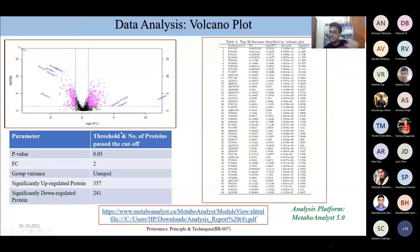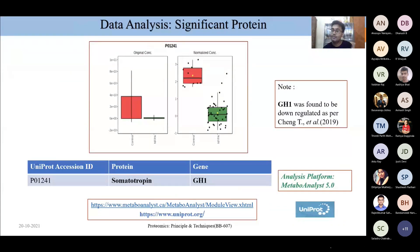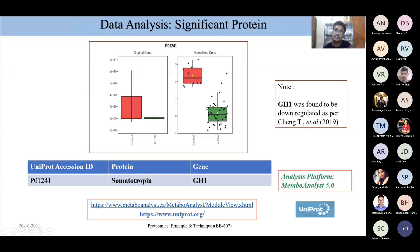By imposing both criteria together — p-value less than 0.05 and fold change — I identified upregulated and downregulated proteins: 57 and 241 respectively. I downloaded the report to compare with the literature. At this point, I cross-referenced with the surveyed paper to see if there were common proteins. In my analysis, GH1 was found to be downregulated, consistent with the reference paper where GH1 was also downregulated in NFPA versus control — this was one of my key findings. GH1 encodes somatotropin, confirmed via UniProt.